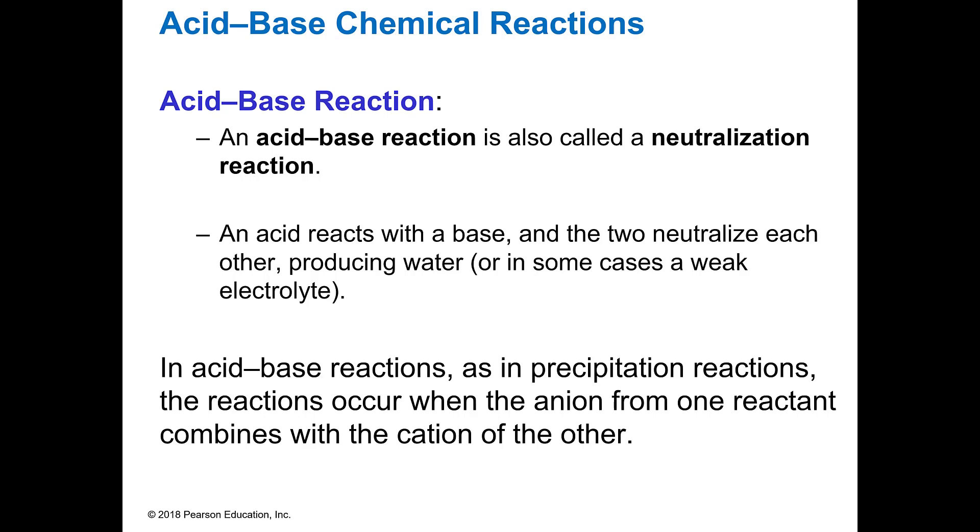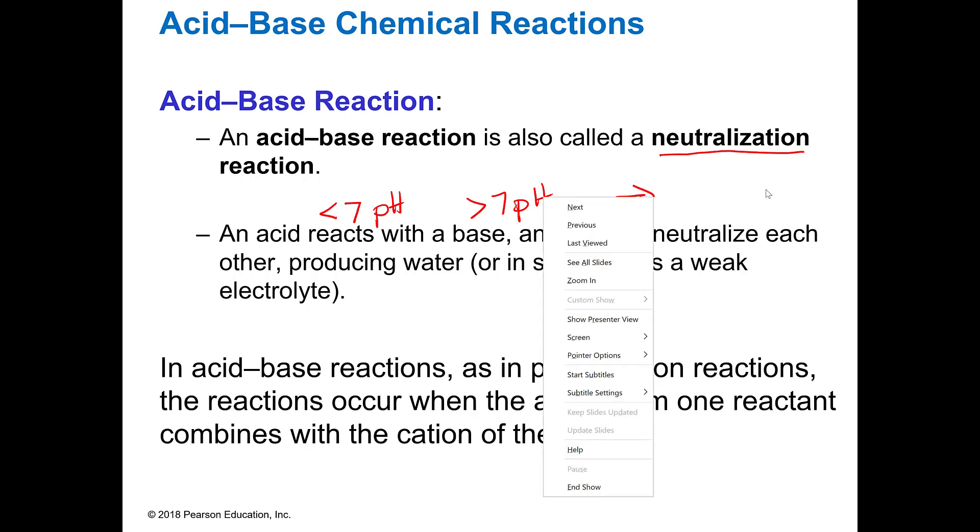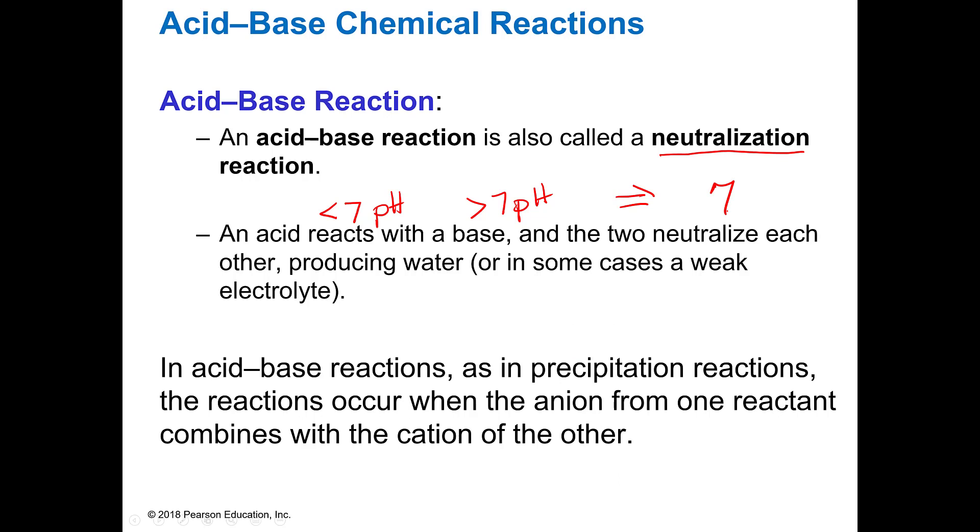So when I react these together in an acid-base reaction we also call that a neutralization reaction because what we're going to do is we're going to take something that's acidic which is less than 7 pH and we're going to react it with a base which is greater than 7 pH and when I get done I'm going to be close to 7 which is neutral. That's basically why we call it a neutralization reaction.